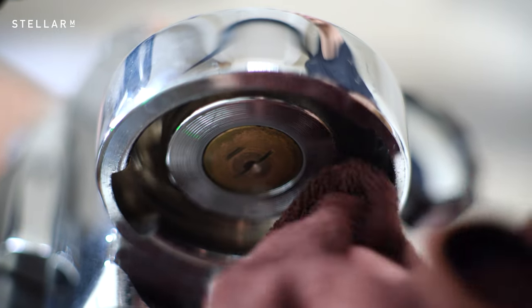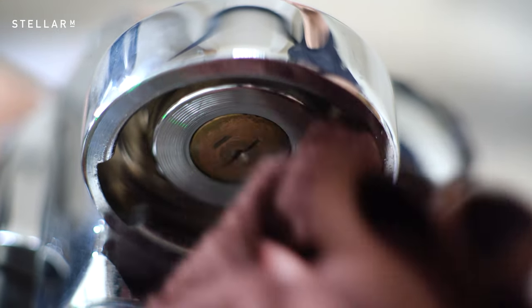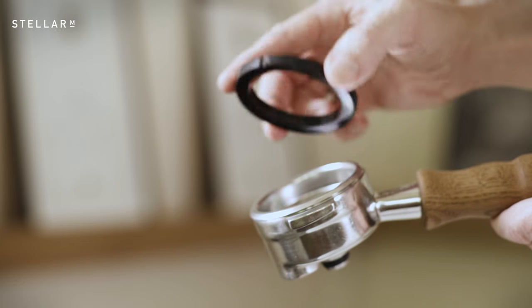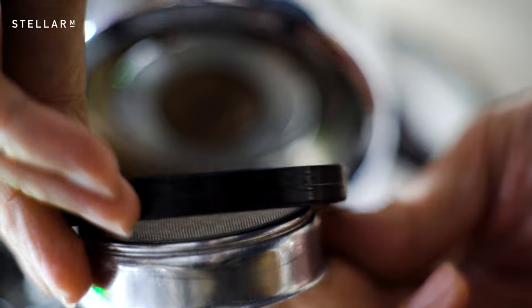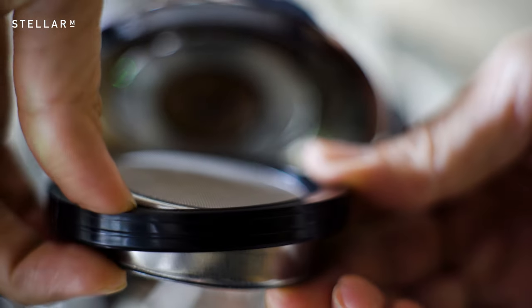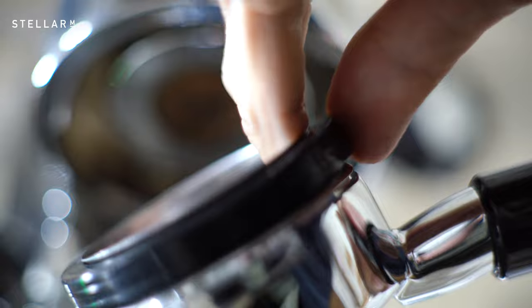To replace the gasket, ensure the bevel edge of the replacement makes contact with the group head and the flat smooth side faces down towards the portafilter. Here, you can see how the gasket fits over the screen. The easiest way to fit the gasket is to use the portafilter.